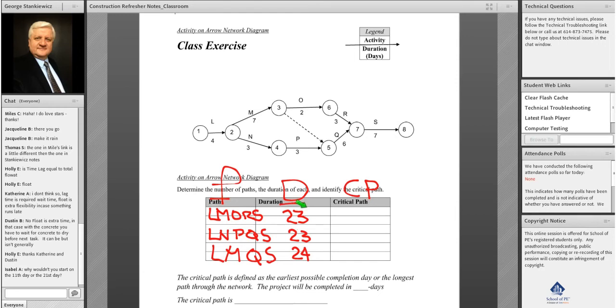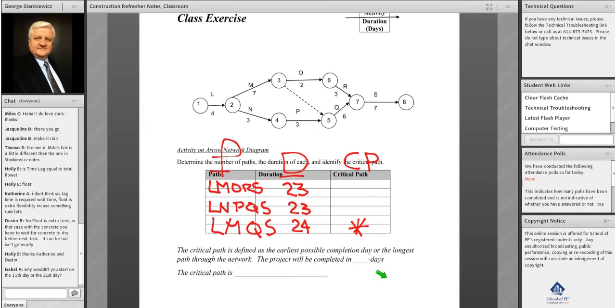Now we can analyze the project and determine what is the longest path through the network, and that is our critical path, or the earliest that the project can be completed is on day 24. So we're done. We've identified it, and the project will be completed in 24 days and our critical path is here.